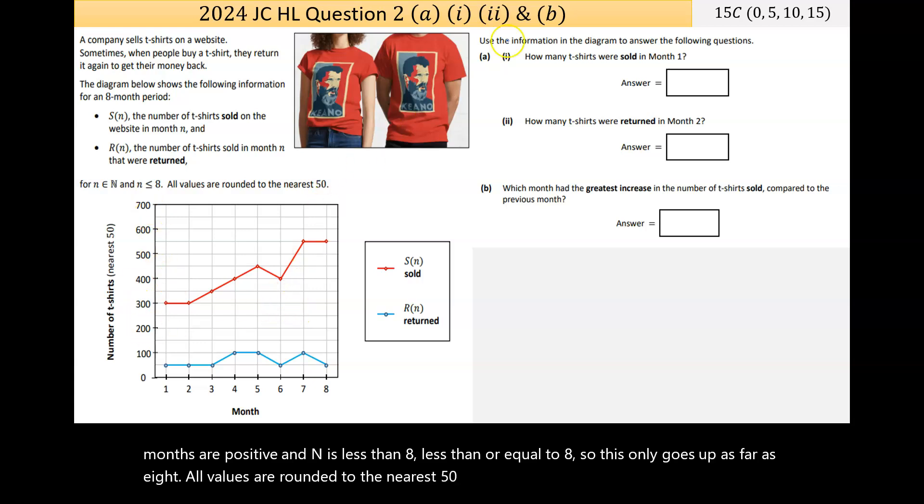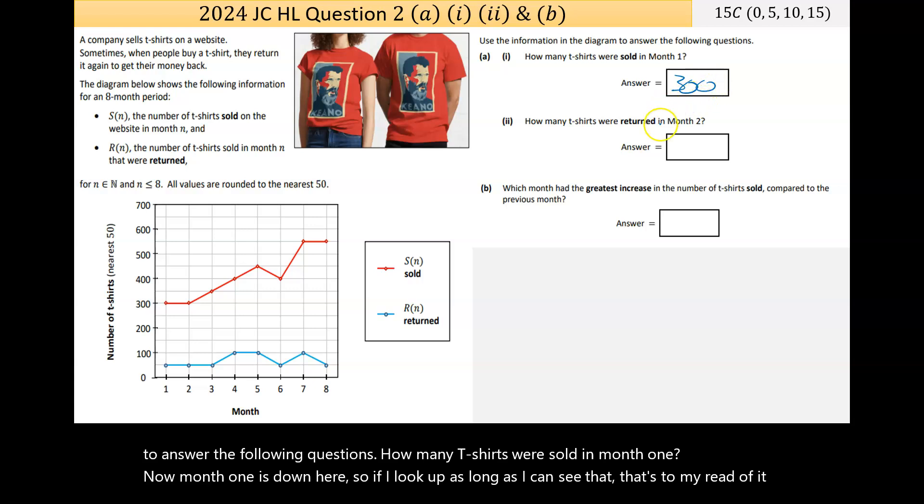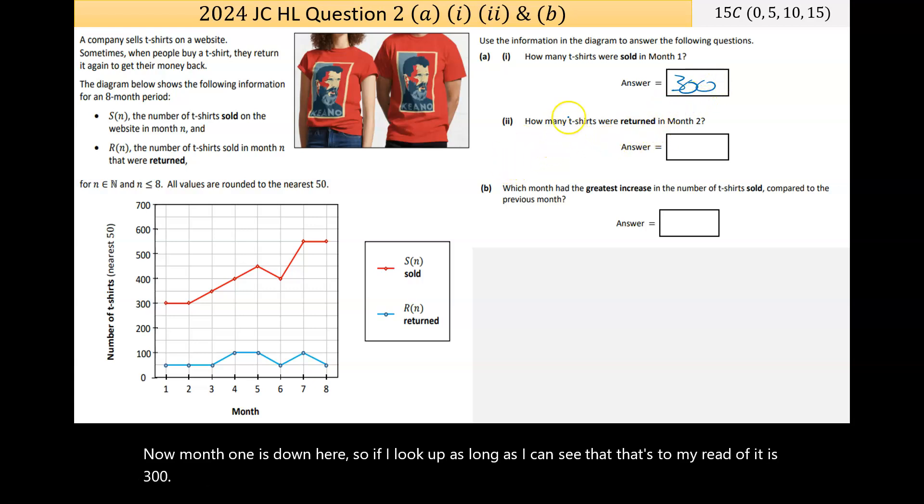Let's see what the questions are asking. How many t-shirts were sold in month one? Month one is down here, so if I look up, I can see that's 300. Part two says how many t-shirts were returned in month two? Month two is this line, so there was 50. It's up to this line here, half of it is 50, and we know it's rounded, so that's 50.